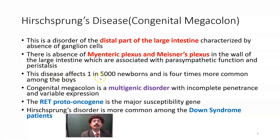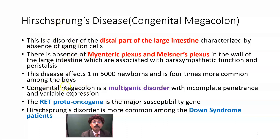The disease affects one in five thousand newborns and is four times more common among boys. The disease is manifested within 24 to 48 hours after birth, and may also present within a few weeks or months after birth. Congenital megacolon is a multigenic disorder with incomplete penetrance and variable expression.